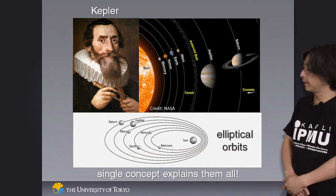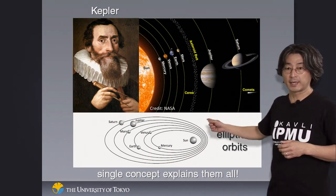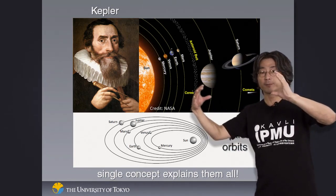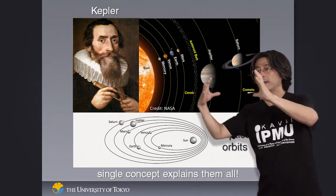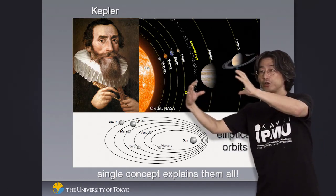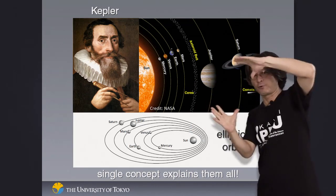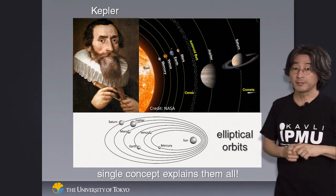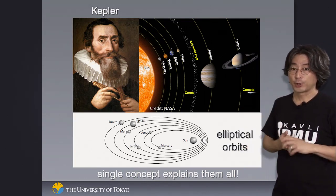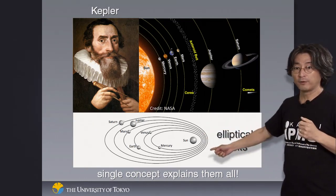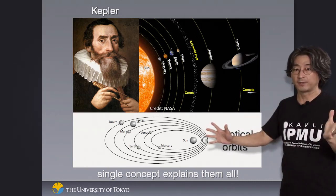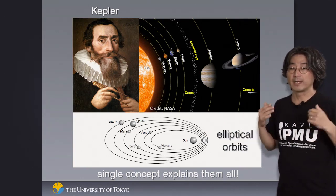Kepler pointed out that the orbits of the planets around the Sun are not in complete circles. They are elongated ellipses, not by a lot but a little bit. Because the data are getting so precise, this little elongation of the orbits in these ellipses instead of complete circles made a difference. Then everything agreed with the observations in the end. At the end of the day, this simple concept of elliptical orbits explained the motion of every single planet. That was a very good theory.